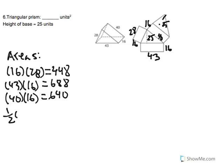it's 0.5 times 43 times the height, 25. This gives us 537.5, and the other triangle is also 537.5.